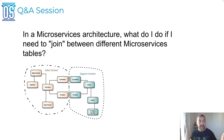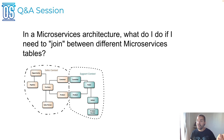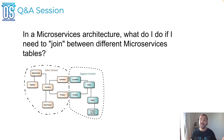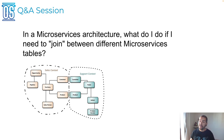You might have some bounded context problem. So it's an opportunity to, of course, if it makes sense, review your architecture, your domain, and check if maybe those microservices instead of doing a join might return to become a monolith application. So it's worth reading the bounded context article by Martin Fowler and reviewing the DDD book as well.